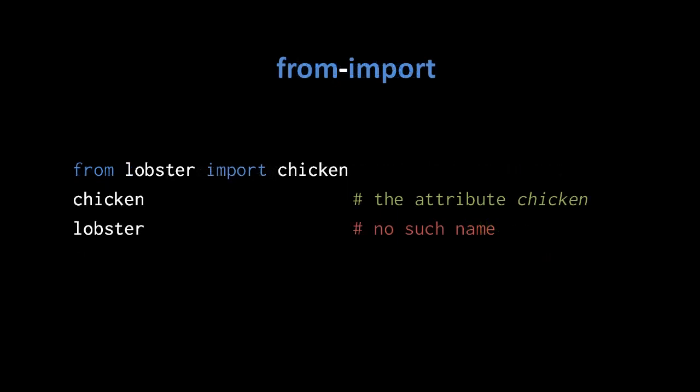Sometimes when dealing with modules, we're really just interested in one or two attributes from that module. There's the from import statement, which imports the specified module just like a regular import statement, but the module object itself is not actually assigned to any attribute in the local namespace. Rather, just the specified attribute of the module is assigned to the local namespace. So from lobster import chicken means we want the attribute chicken from the module lobster — lobster is imported but not assigned to the local namespace, but chicken is. We can use chicken directly without writing lobster.chicken.